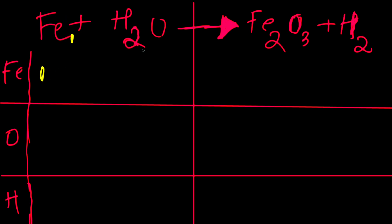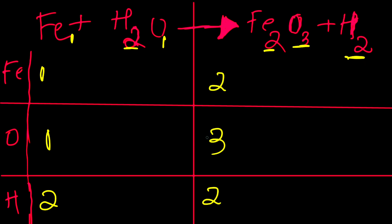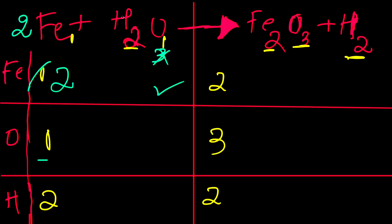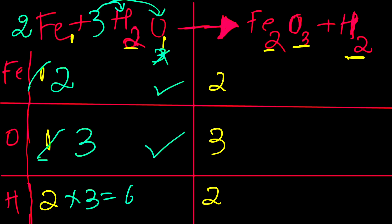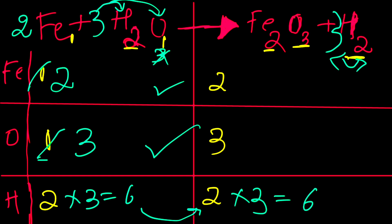Let's consider another example. On the left-hand side: 1 iron, 2 hydrogens, 1 oxygen. On the right-hand side: 2 iron, 3 oxygens, 2 hydrogens. To balance iron, we add a coefficient of 2 on the left — iron is now balanced. Next, to balance oxygen, we add a coefficient of 3, giving 3 oxygens on both sides. Hydrogens become 3 into 2 equals 6. We add a coefficient of 3 on the right, giving 3 into 2 equals 6 hydrogens — everything balanced: 2 iron, 3 oxygen, 6 hydrogens.